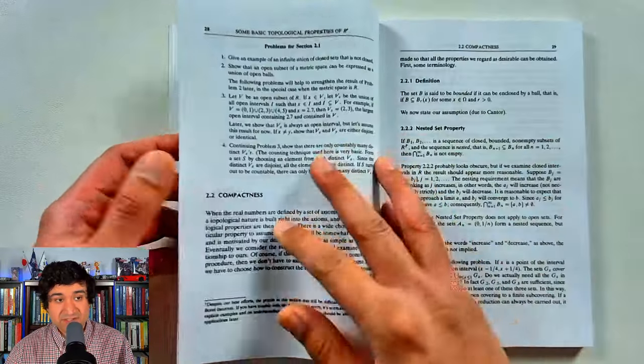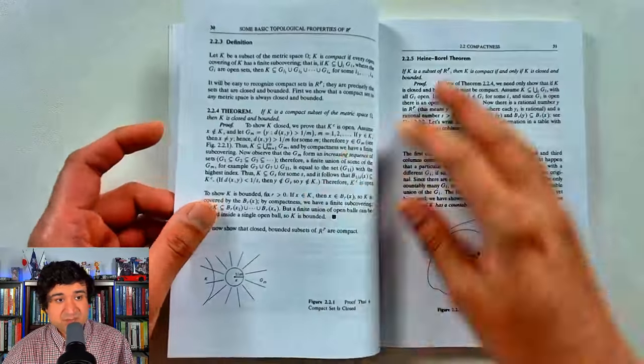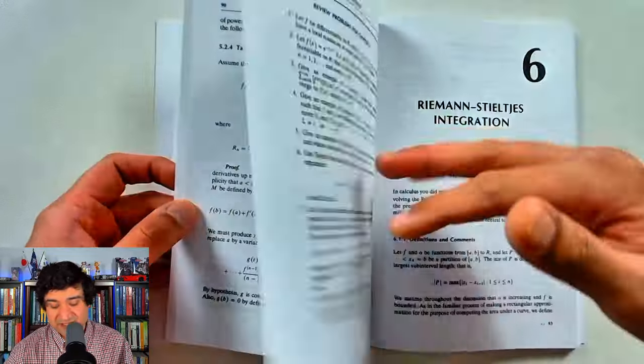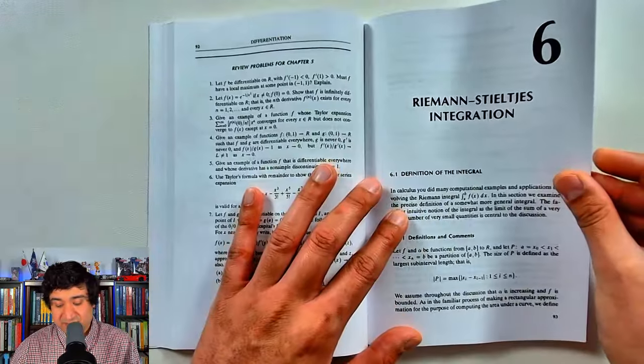You can check this out if you want to but I'm just going to skip to towards the end of the book here. One of the last chapters I think chapter six here, Riemann-Stieltjes integration.